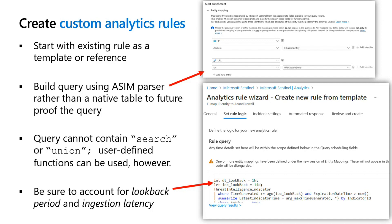For example, if logon data is one of the values you're looking for in your rule, you might want to use the ASIM syntax for logon data rather than the format used natively by the vendor. This allows you to get logon data information regardless of who the vendor is and how they name that type of data — some might call it user logon, some logon data, some logon information. Using ASIM parsers standardizes and future-proofs any queries you build so they don't become obsolete.